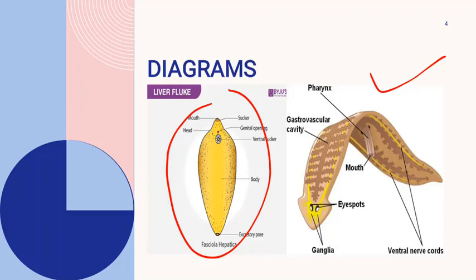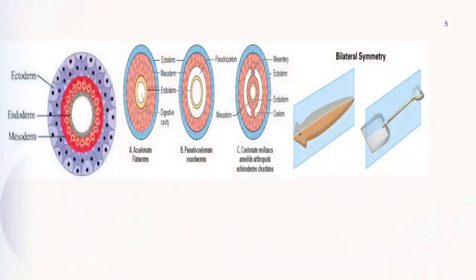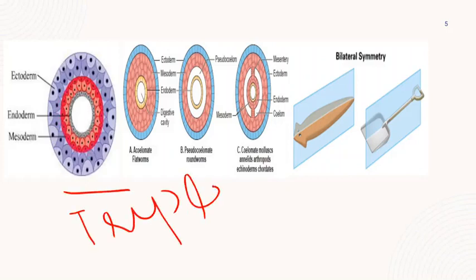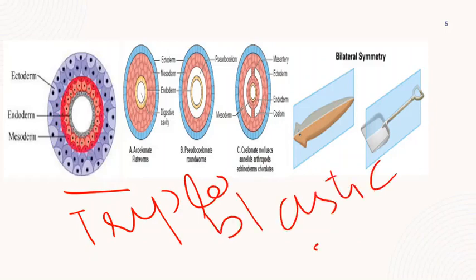Moving on toward these characteristics, as you can see in this diagram, triploblastic organization means the organization of an organism in which the parts or organs are derived from three germ layers. All three germ layers — endoderm, ectoderm, and mesoderm — play a very vital role in the development of the organism.